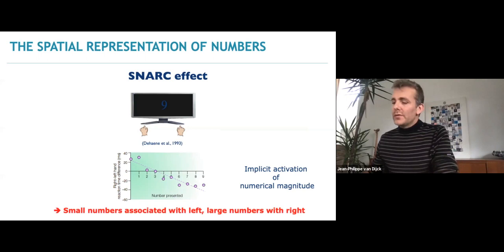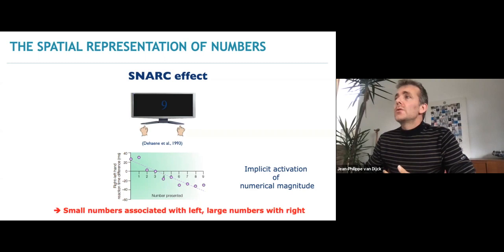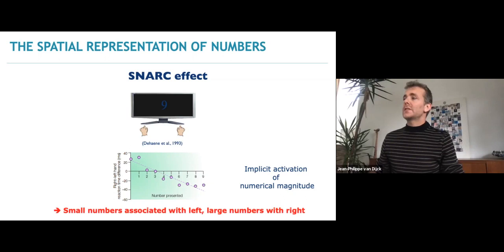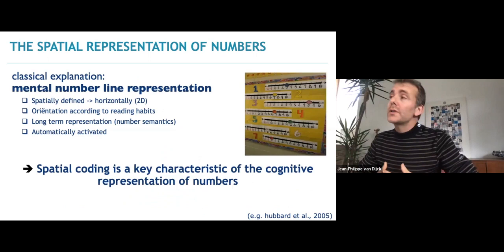As an index of the implicit processing of numerical magnitude, I take the SNARK effect. In this task you need to process the parity status, and nevertheless you see an influence of numerical magnitude on the responses people give. Typically, people have faster left-hand responses to small numbers and faster right-hand responses to large numbers — the typical regression line depiction of these differential reaction times.